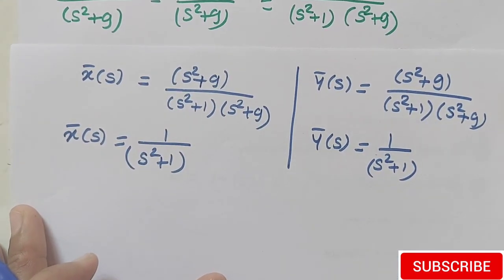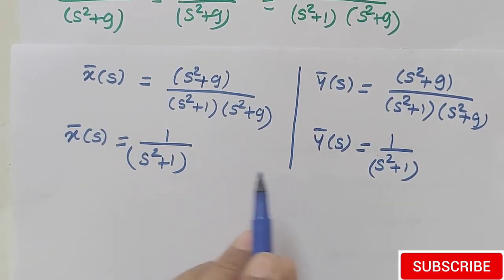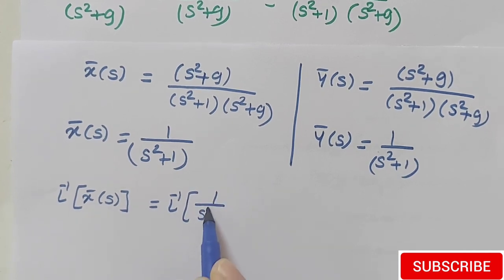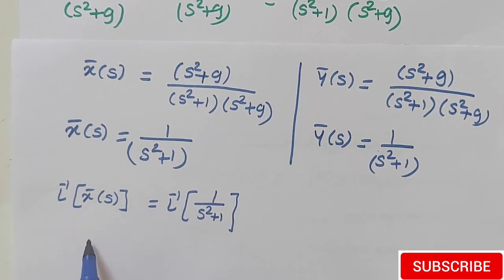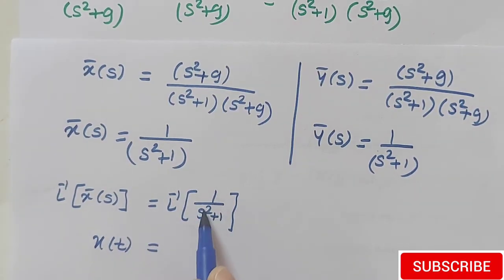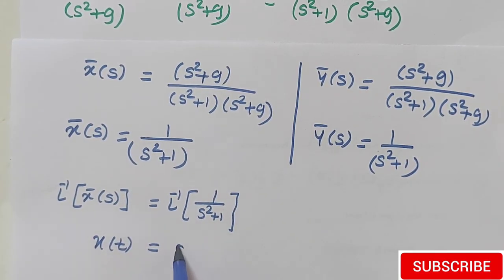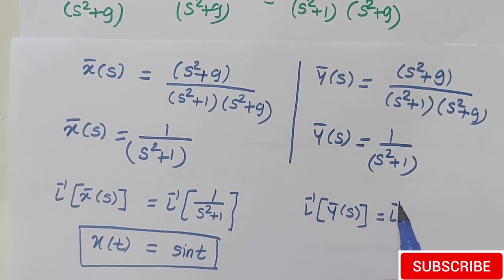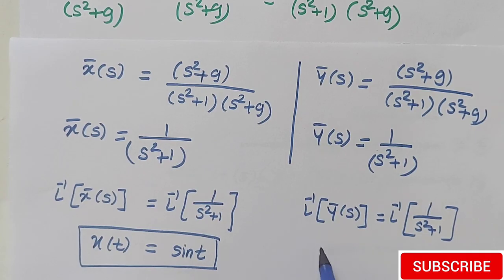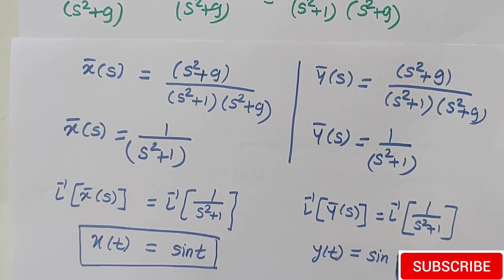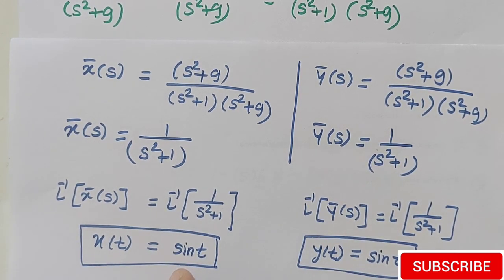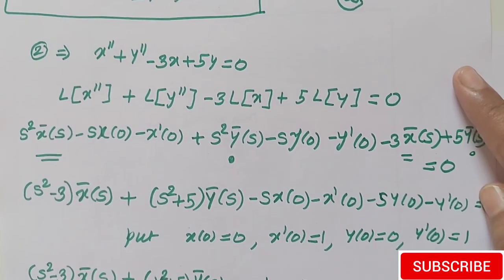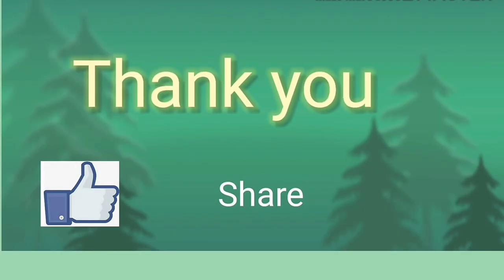Now we require the solution x(t) and y(t), so we apply the inverse Laplace transform to both sides. Laplace inverse of X̄(s) = Laplace inverse of 1/(s² + 1), and since Laplace inverse of X̄(s) is x(t), we get x(t) = sin(t). Similarly, Laplace inverse of Ȳ(s) = Laplace inverse of 1/(s² + 1) gives y(t) = sin(t). So the solution of the given differential equation is x = sin(t) and y = sin(t). In this way we can solve any simultaneous equation using these steps. Thank you, like, share, and subscribe.